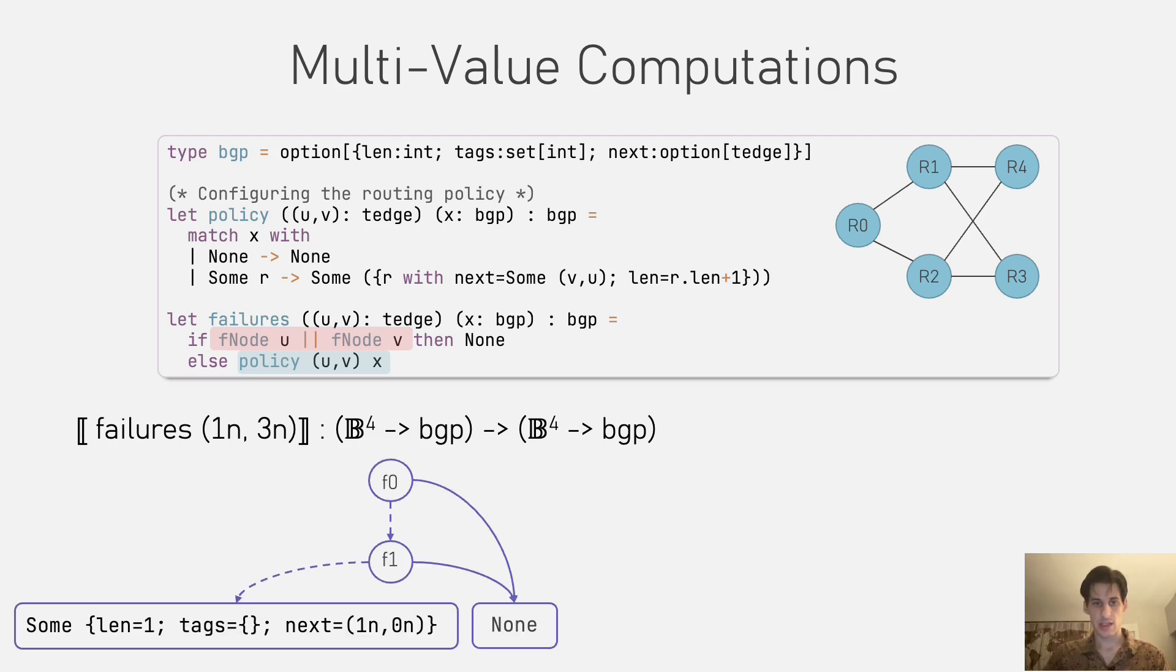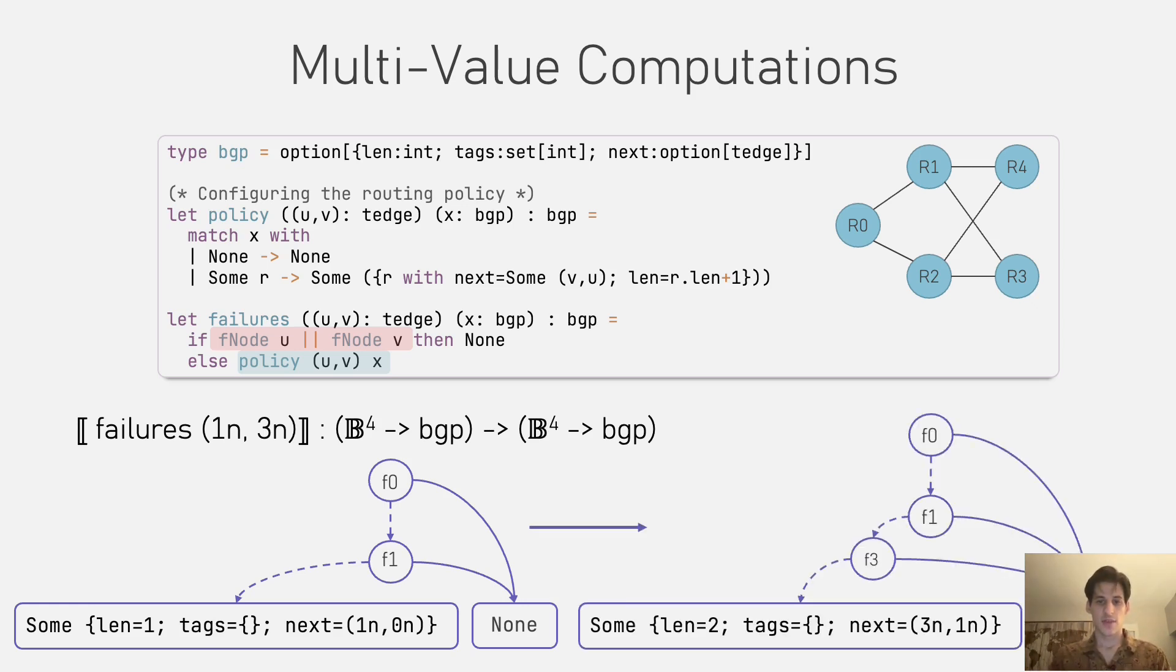We represent this using a variant of BDDs called multi-terminal BDDs, where the only thing that changes is that the terminal nodes can take any type of value, not just a boolean. So the diagram can have more than two terminal nodes.